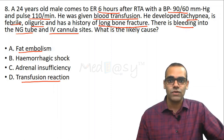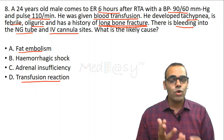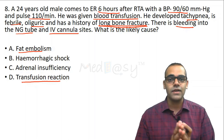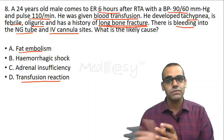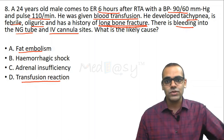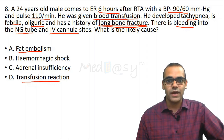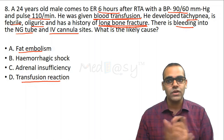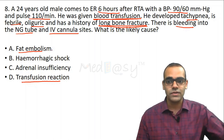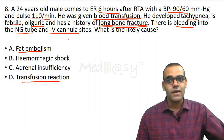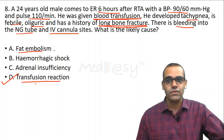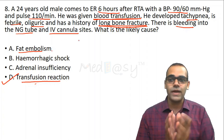The confusion is between fat embolism and transfusion reaction. With long bone fracture and hypotension and tachycardia, we think of fat embolism syndrome. However, there was also a history of blood transfusion followed by tachypnea, tachycardia, hypotension, and bleeding from the cannula site and NG tube — pointing to transfusion reaction. The answer is transfusion reaction.